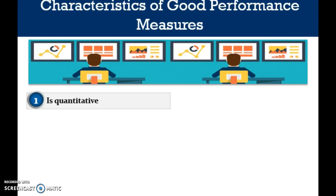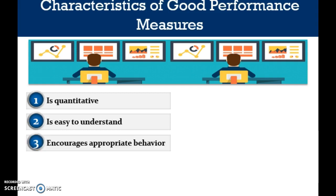What are the characteristics of a good metric? The first question to be asked about a metric is: is it quantitative? While not all metrics are quantitative, this is usually a requirement when measuring the outputs of processes or functions. The second question is: is it easy to understand? Third is: does it encourage appropriate behavior? A basic principle of management is that metrics will drive behavior.